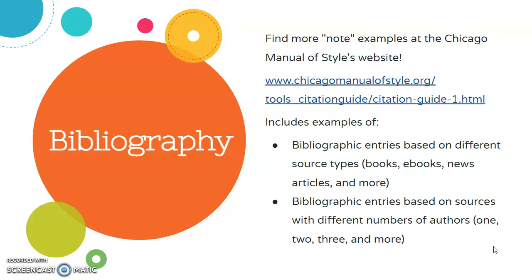Again, the examples shown thus far have been based on journal articles. But if you'd like to find more examples, the official Chicago Manual of Style website has many to browse through. The site has examples of bibliographic entries based on other source types — things like books, ebooks, news articles, and more — and sample entries based on sources with different numbers of authors. So if you'd like to see sample entries for articles with two authors or even a dozen authors, the Chicago Manual of Style website linked here has many examples.